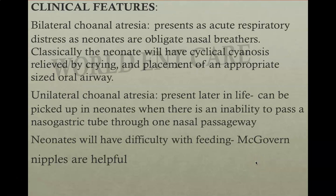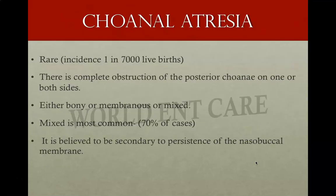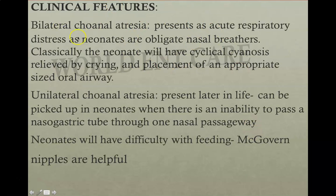Now talking about clinical features, choanal atresia can be unilateral or bilateral. If it is bilateral choanal atresia, it is a life-threatening condition and presents as acute respiratory distress in neonates because they are obligate nasal breathers — they cannot breathe through the mouth. Classically, the neonate will have cyclical cyanosis which is relieved by crying because when they cry, they breathe through their mouth.